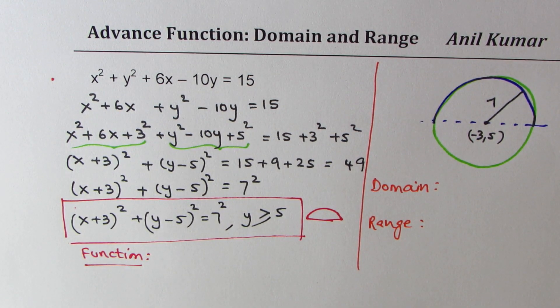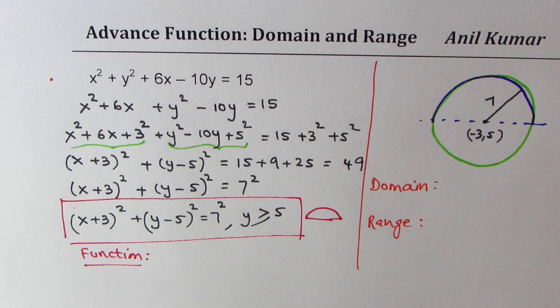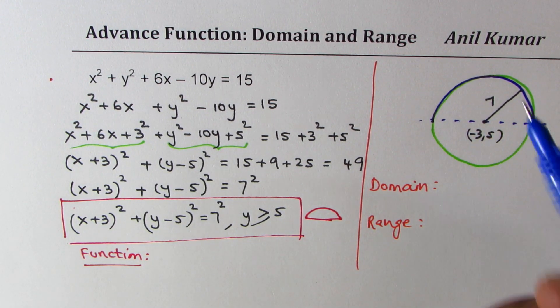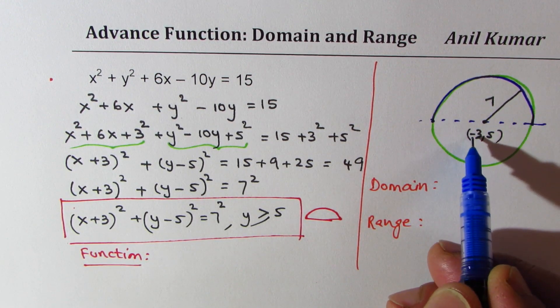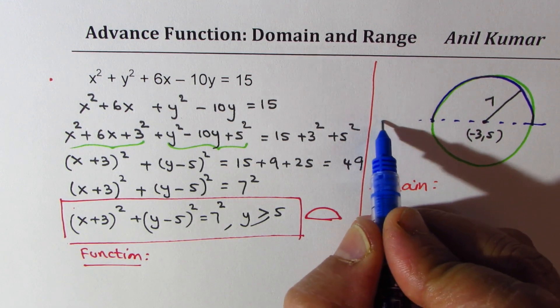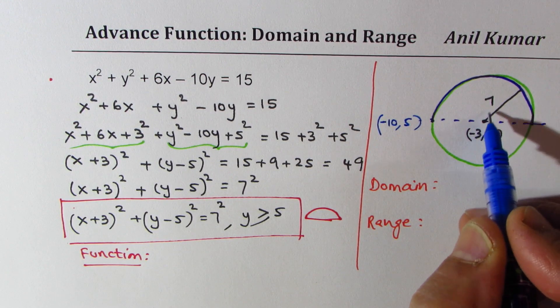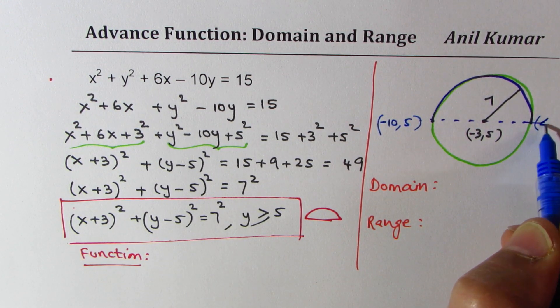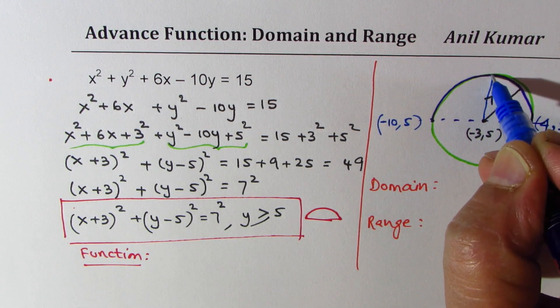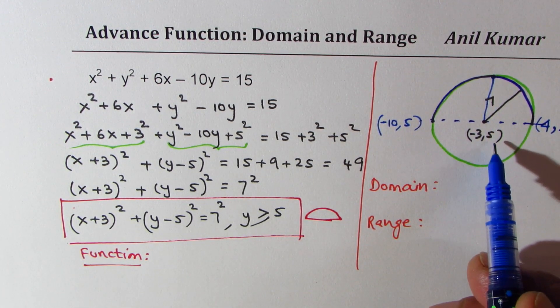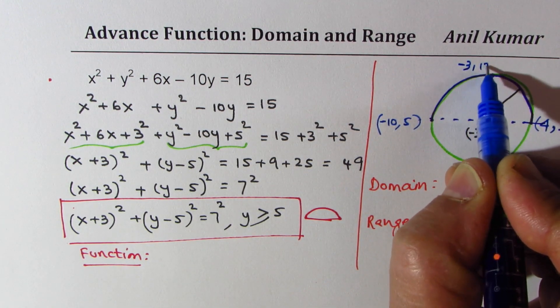Now easy way is since we know 7 is the radius, I could get these two points. Taking away 7 from minus 3 gives us minus 10 and y value of 5, and on this side if I add 7 I get plus 4 and 5. And on the top the maximum value could be 5 plus 7, 12. So we have minus 3, 12 here.